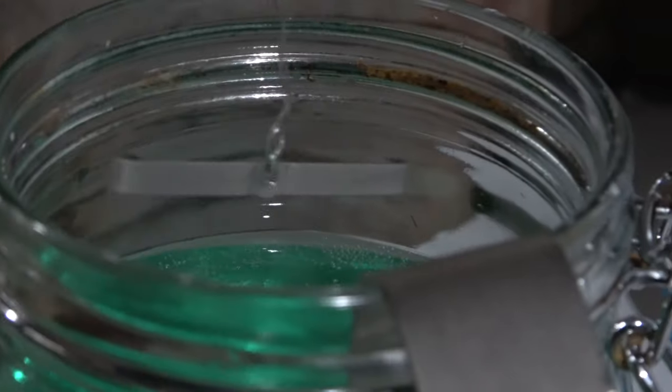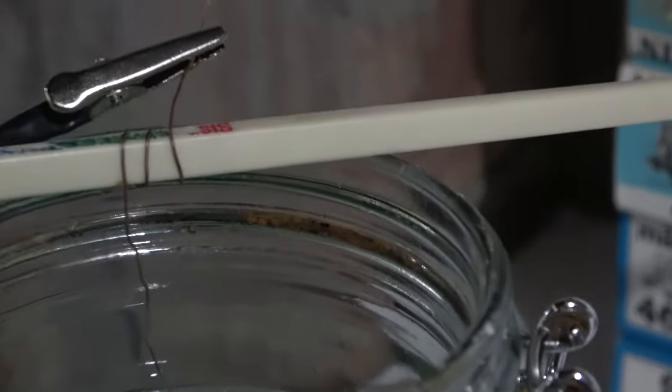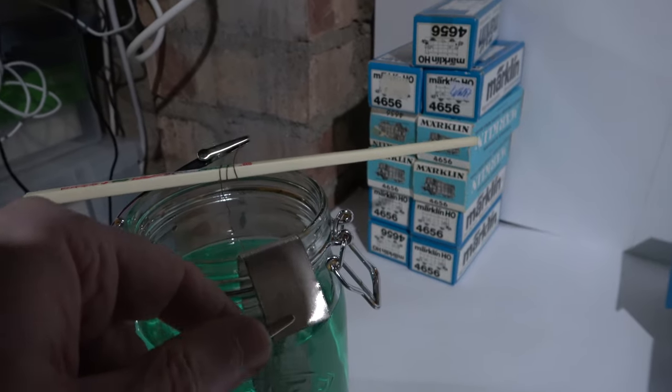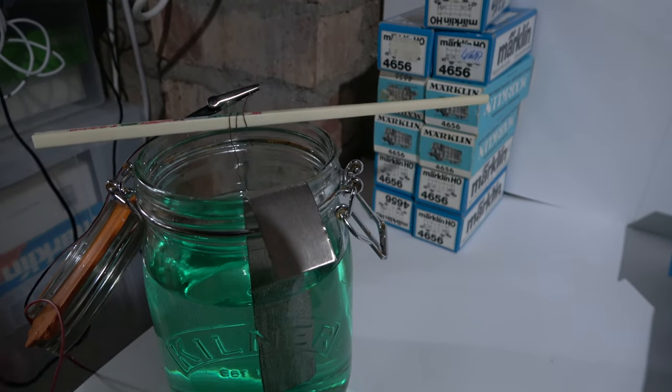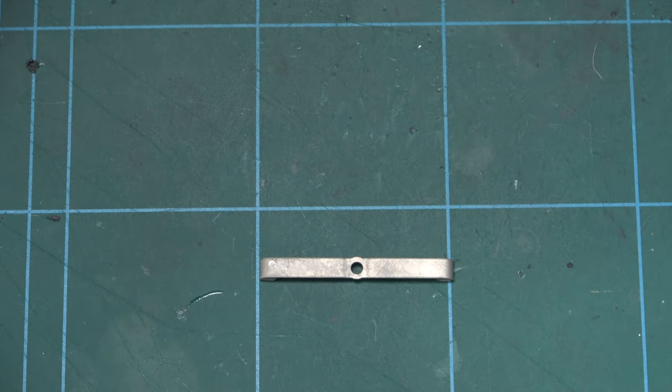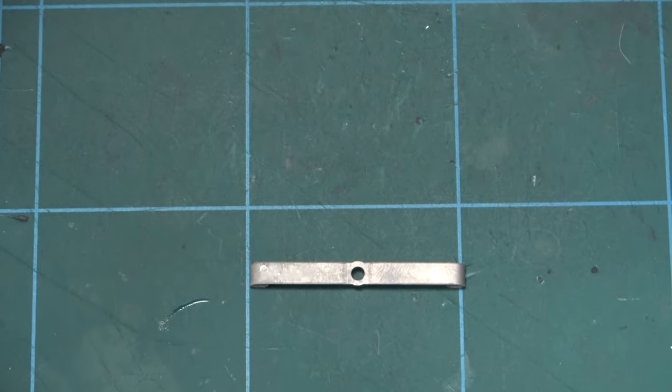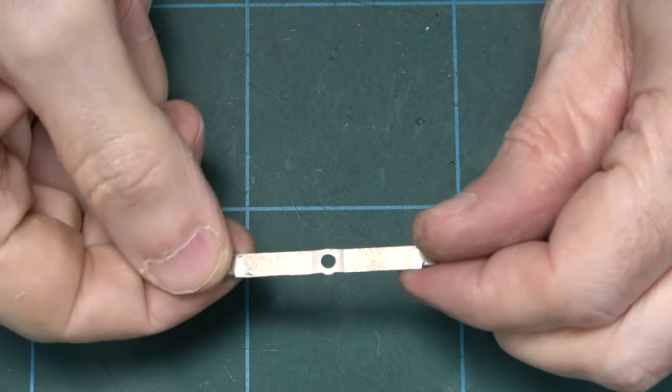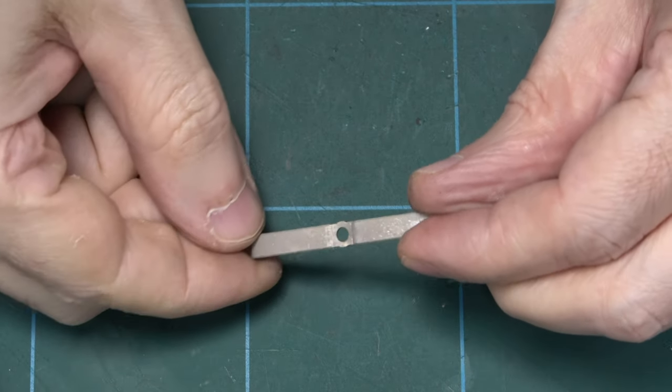40 minutes have passed. Let's take a look. Yep, looks like it's ready. So let me disconnect the clips and we'll take the slider out and move to the bench. There we are. As you can see, the slider has now completely changed color and it is covered in a dull grey layer.